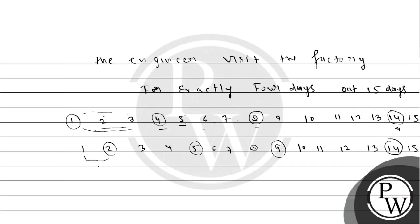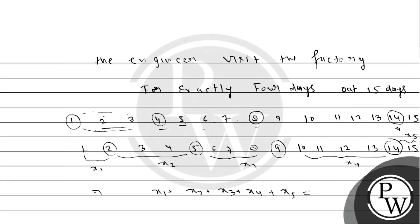So let's suppose the gap before the first visit is called x1, then the gap between visits is x2, x3, x4, and the gap after the last visit is x5. So we have x1 plus x2 plus x3 plus x4 plus x5 equals 15. How many dates do you have to pass? 1, 2, 3, 4, 5, 6, 7, 8, 9, 10, 11.